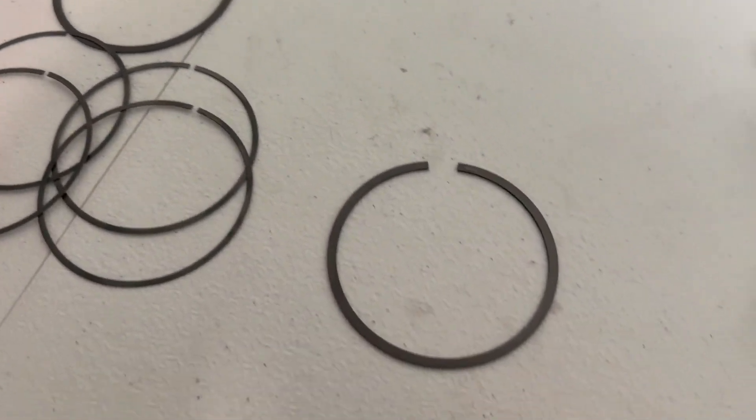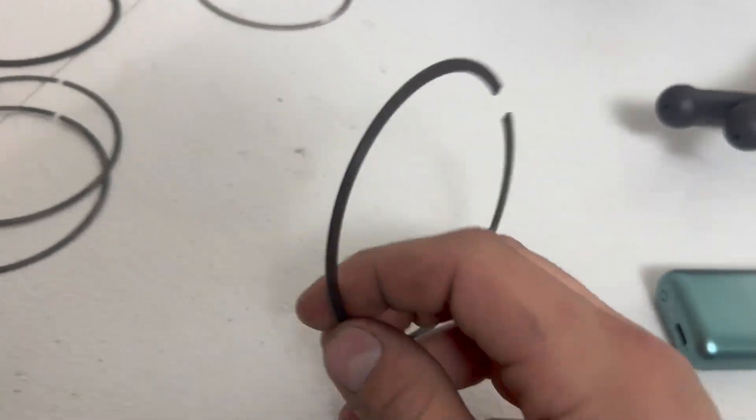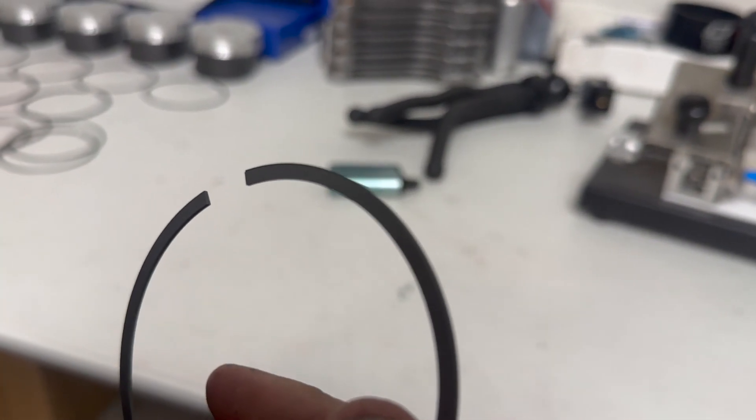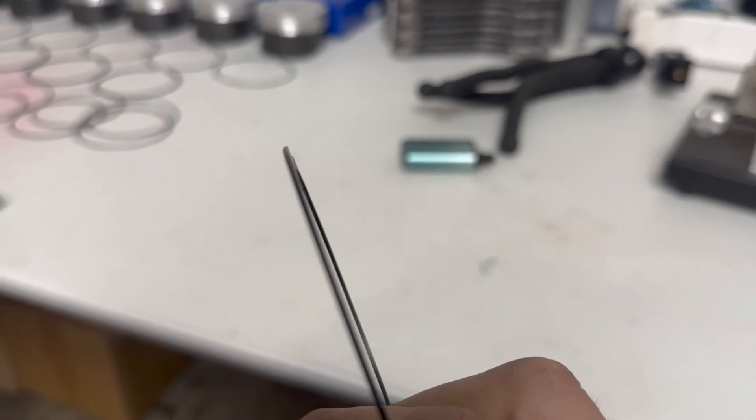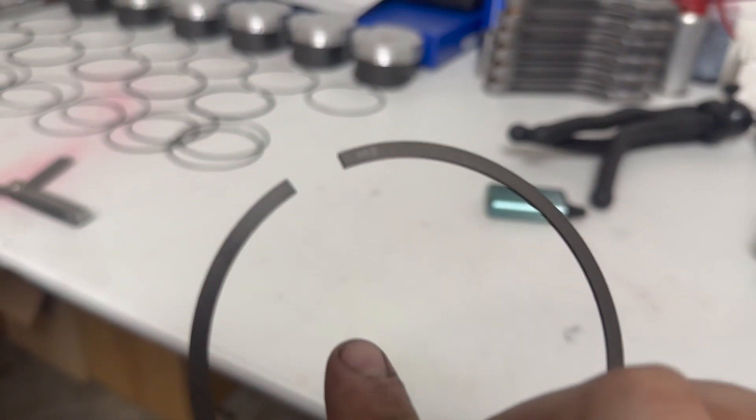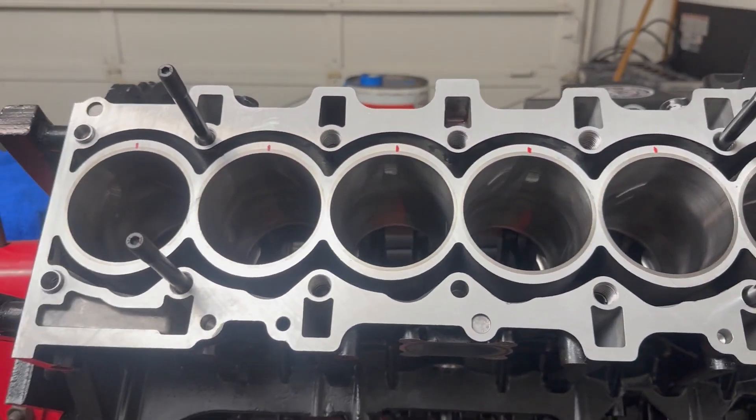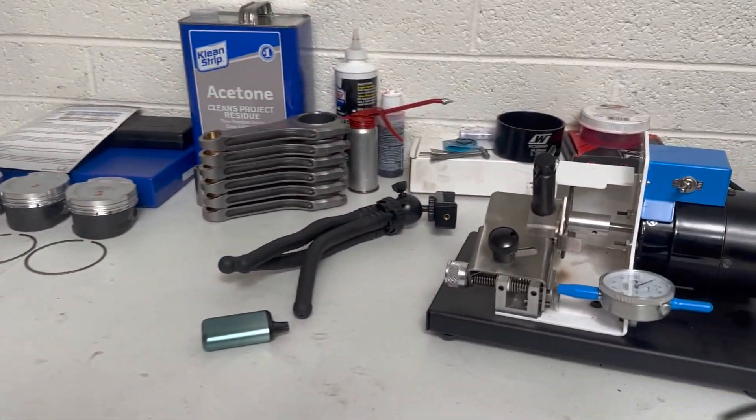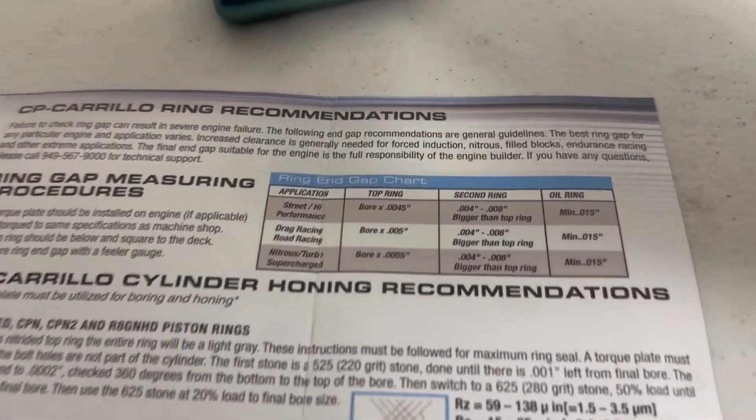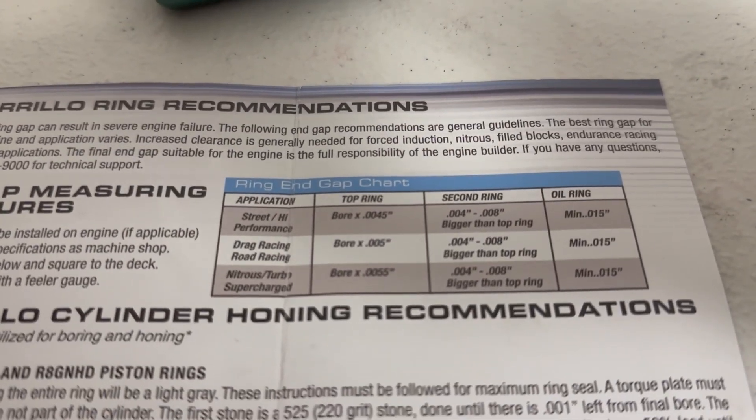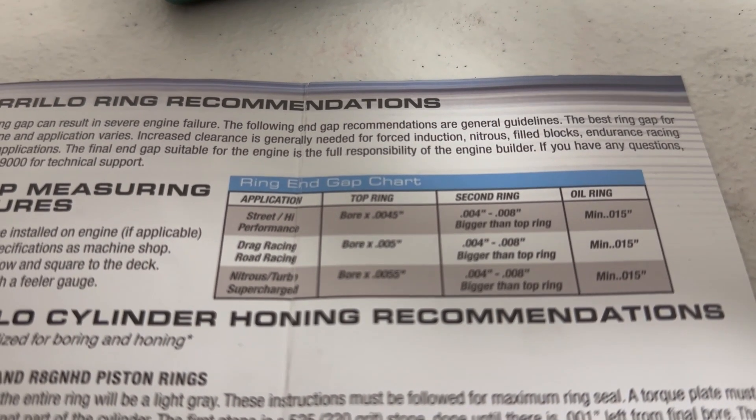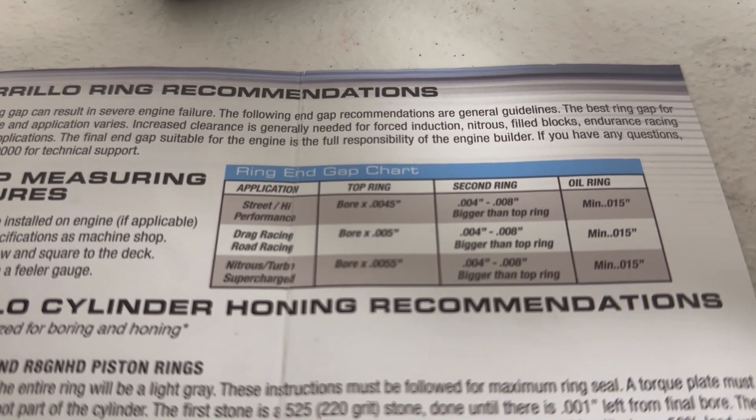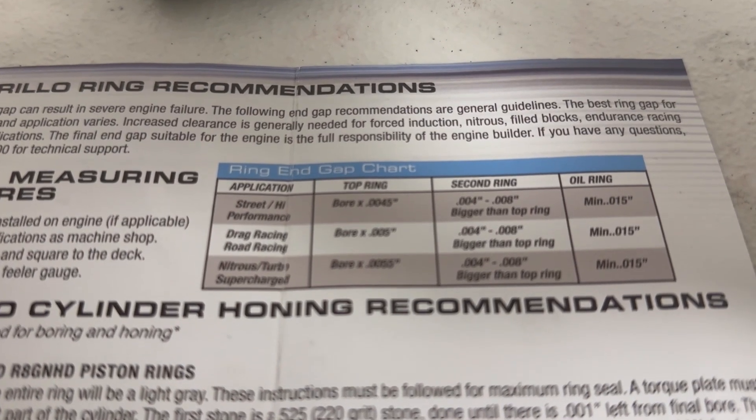I am going to do the scraper rings now. These rings have like a little lip on them that faces down in the cylinder, and they're marked with the N50 on the top. I'm going to put all these in there and do the floor measurements, and then I'm going to grind them all up. According to the CP Carrillo spec sheet, they should be 4 to 8 thousandths bigger than the top ring, and the top rings are right at 19 thousandths. So I'm going to set these at 25.